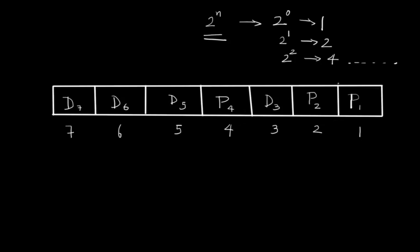Just you have to remember this thing that 2 raise to n. So if you have one more bit of data in this array itself, then here you would have 2 raise to 3 which is 8, which would be the fourth parity bit.